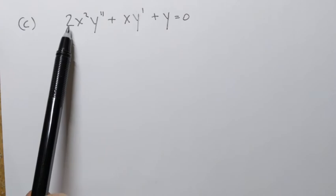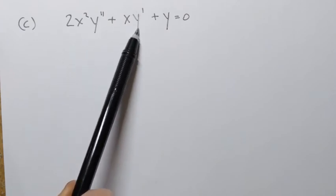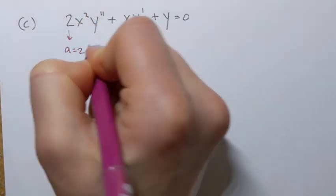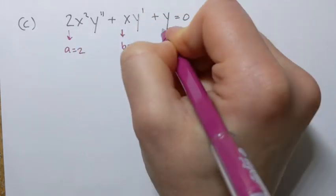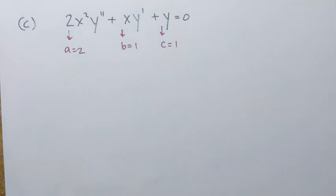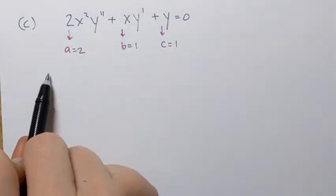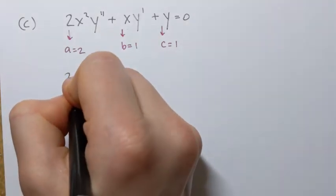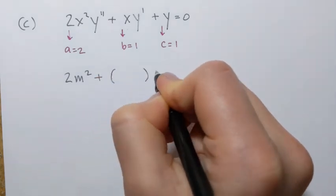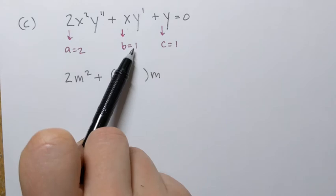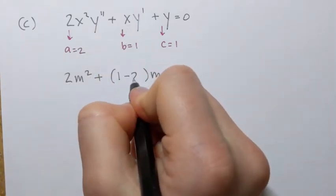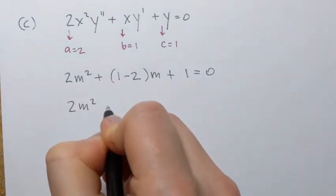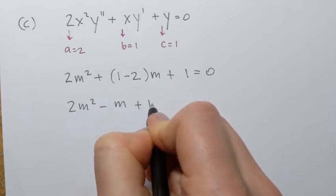Next, let's solve: 2x squared y double prime plus xy prime plus y equals 0. Writing down the constants: a equals 2, b equals 1, and c equals 1. The characteristic equation is am squared plus (b minus a)m plus c equals 0, so 2m squared plus (1 minus 2)m plus 1 equals 0, which gives 2m squared minus m plus 1 equals 0.